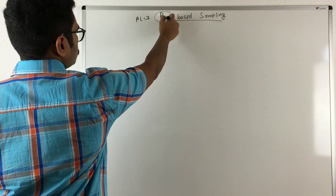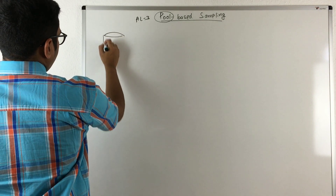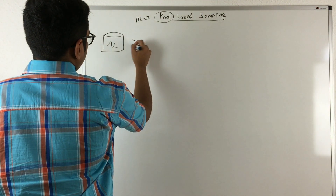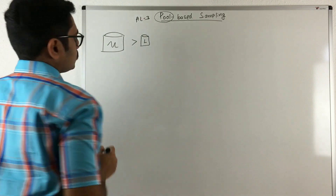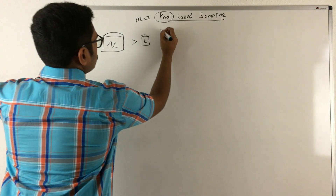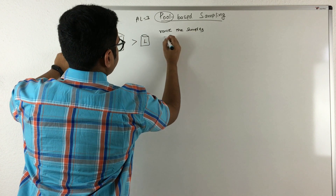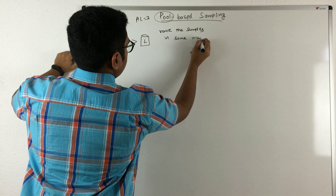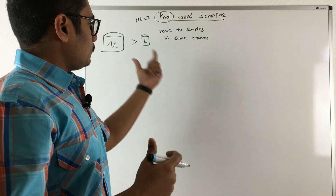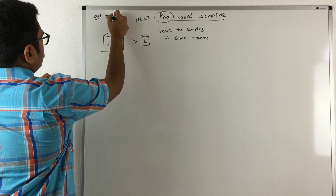We have a key term here: pool. What we have is unlabeled instances in a much larger size compared to our labeled instances, which are small. The basic idea in pool-based sampling is that you rank the samples in some manner based upon some criteria chosen by the learner. You rank all the samples inside this pool, and you get all the data at once.